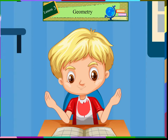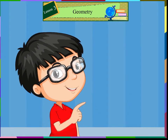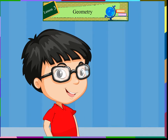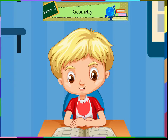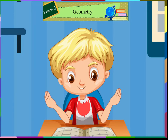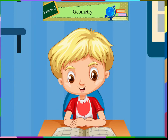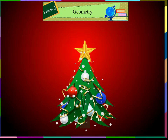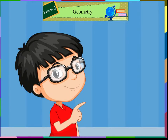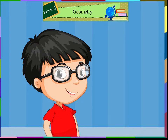Have you seen this signboard on roads? Yes, we have a similar one near our school. What is the shape of this board? It is a triangle. Yes, it is a triangle. A triangle has three corners or vertices and three sides. It has only one face. A Christmas tree also looks like a triangle. Triangles can be of various sizes as shown on the screen.